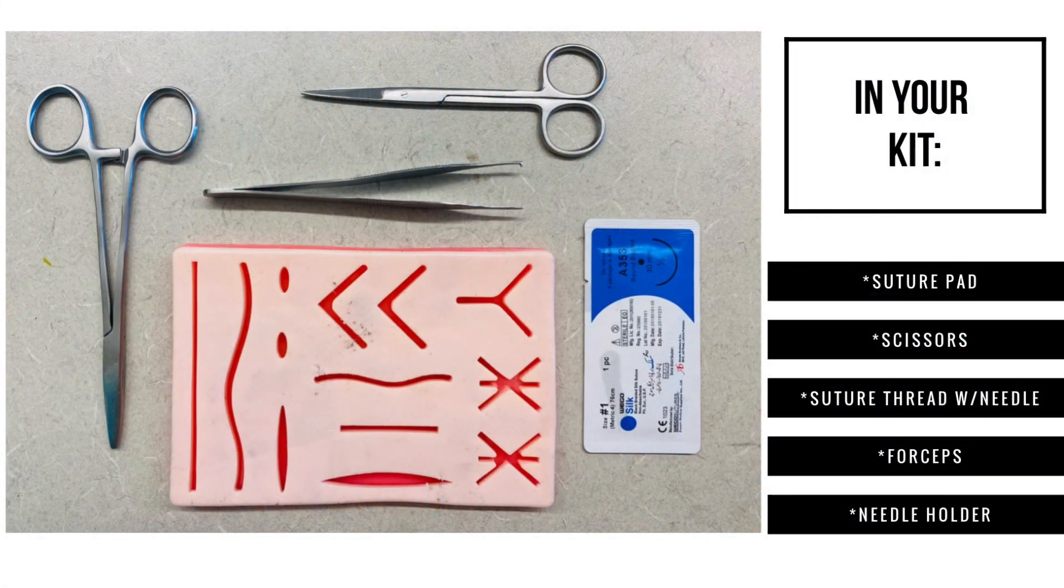Included in your individual kit is the suture pad, scissors, forceps, needle holder, and booklet. Let's look at each.